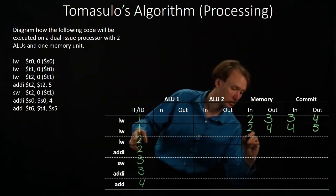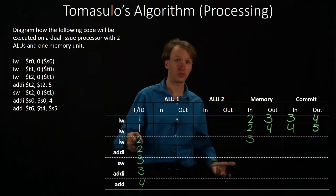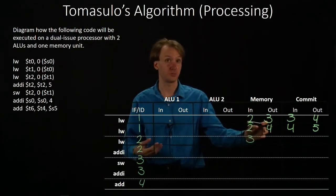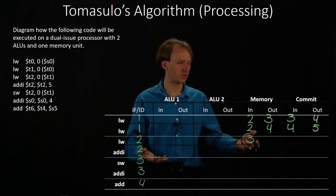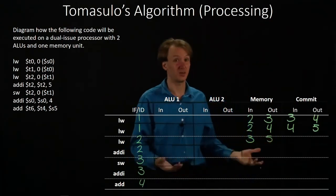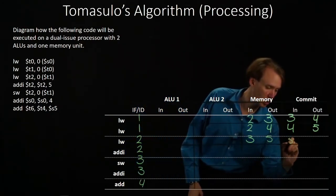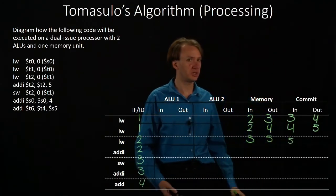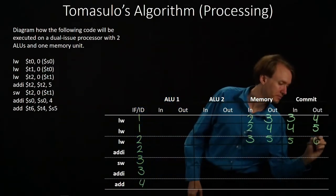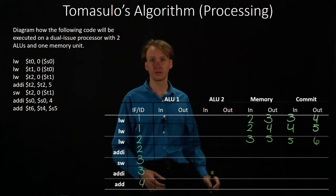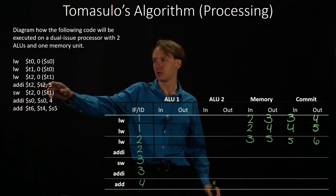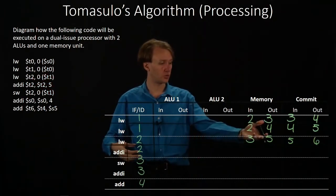The third load word will go off to the memory unit in cycle three, but it needs to wait until the second load word has been computed. It also has to wait for the memory unit to be available, so there's no way this instruction will be computed before cycle five. It can then go off to the commit unit, and it can be committed in the next cycle. Our out-immediate instruction is dependent on T2, so it needs the results of the third load word.